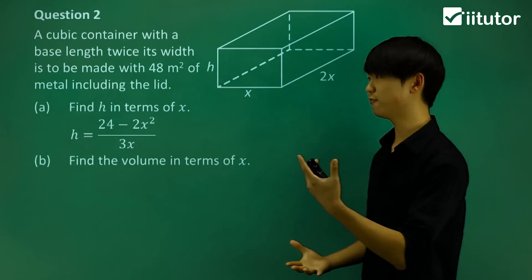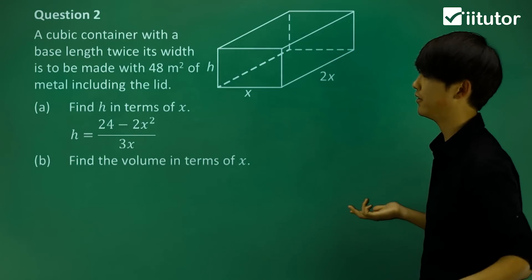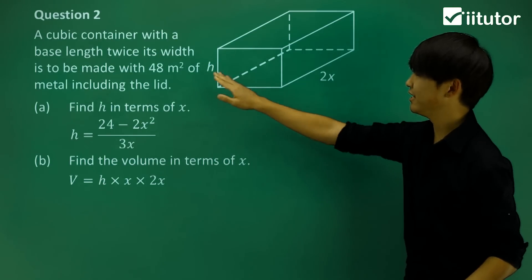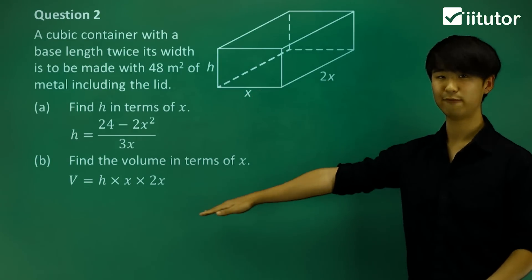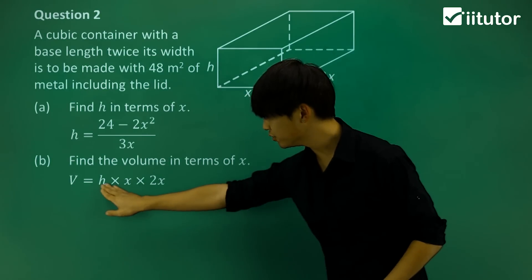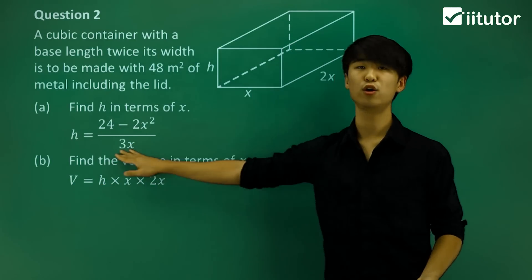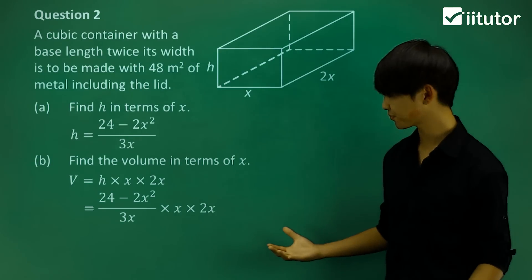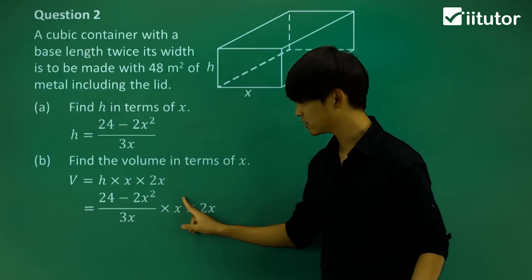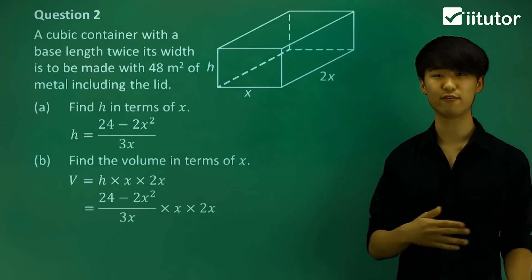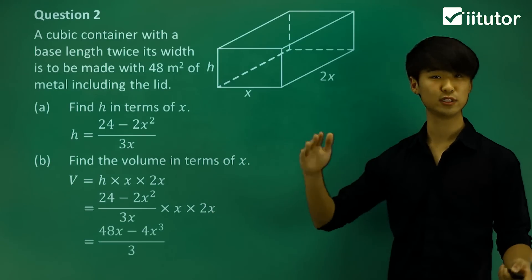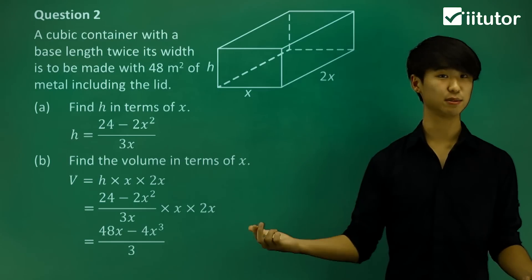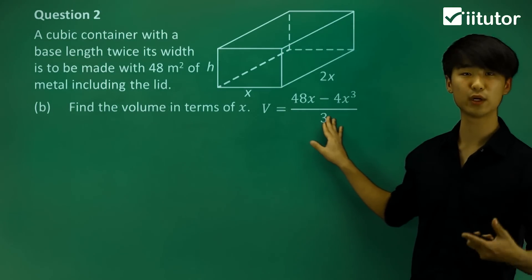Next, we find the volume of the container in terms of x. Volume equals all dimensions multiplied together: h times x times 2x. In terms of x, we replace h with the expression found previously. After cancelling the x terms and multiplying through by 2x, we simplify to get the volume expressed purely in terms of x.